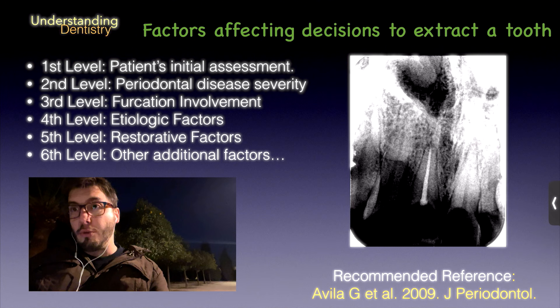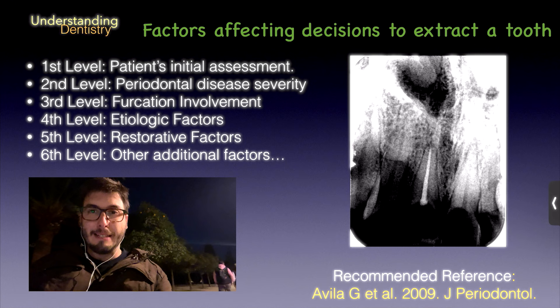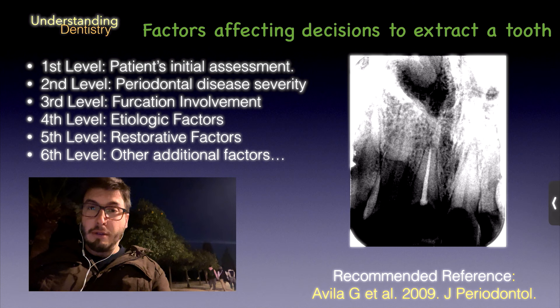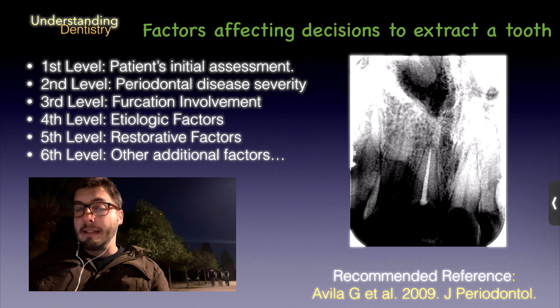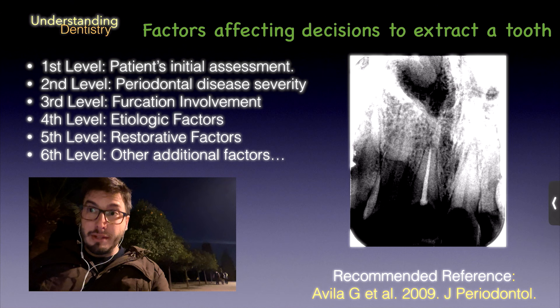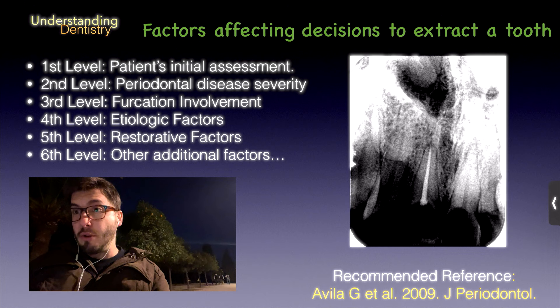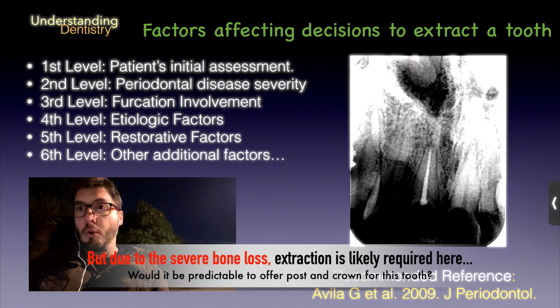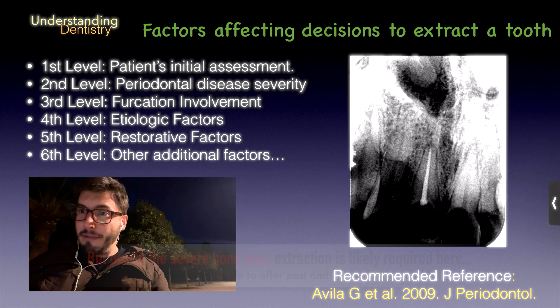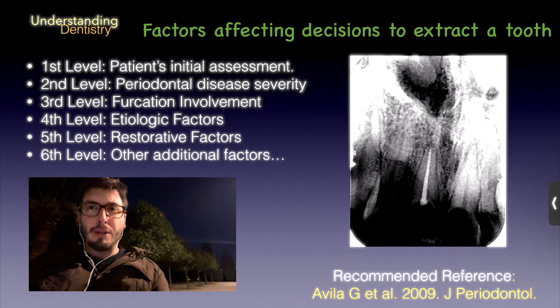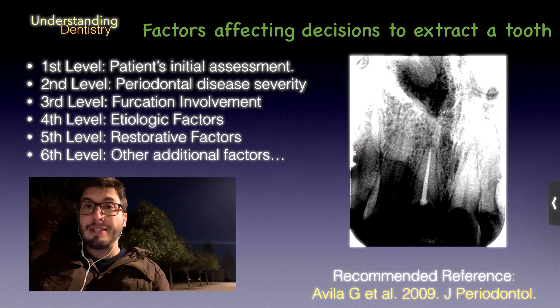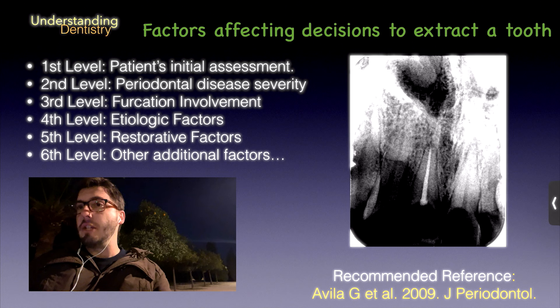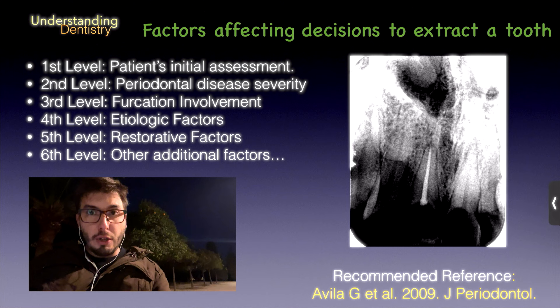Now we need to understand factors that will compromise the prognosis of the teeth if we are willing to be conservative. Because sometimes we have decisions to take, just like in this radiograph here on the right side of the screen — a central incisor with endodontic treatment, some periodontal ligament space widening, distal bone loss, and a decreased alveolar crest level. Can we be conservative? We need clinical information as well. There is an article from Gustavo Avila and collaborators published in 2009 in the Journal of Periodontology that I recommend, because they developed a classification to assess this decision.